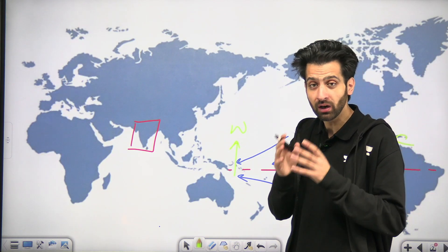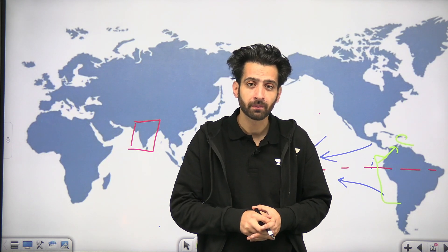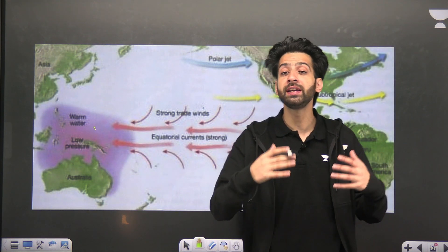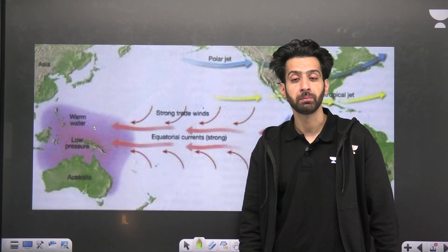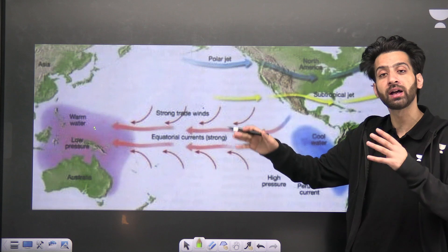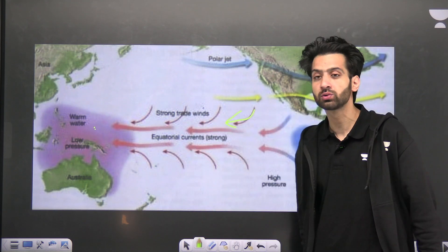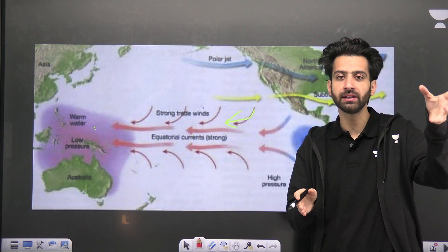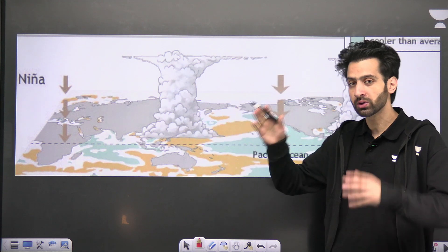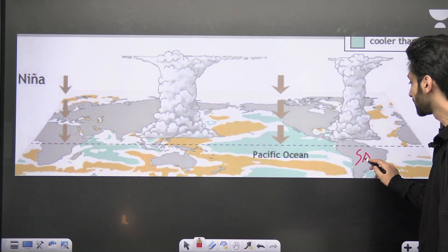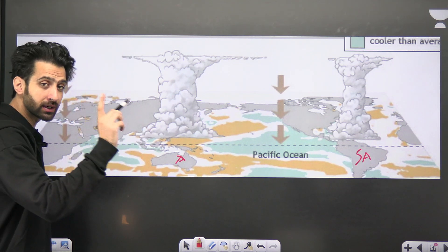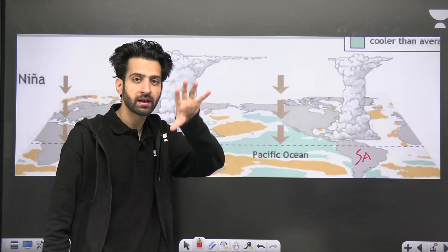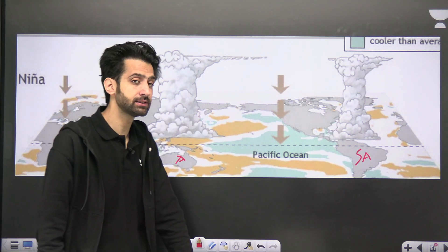Now that we understand how El Niño and La Niña function, let's look at their impact. This is the La Niña situation — you can see the red region of warm water being driven towards the Australian coast, causing heavy rainfall. Now we will take a cross-sectional look at this to see how it impacts Indian climate. This is a cross-sectional diagram showing South America, Australia, India, and Madagascar. These arrows show the direction of air movement — these are the Walker cells.